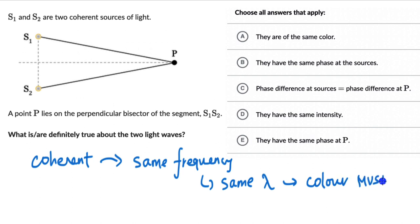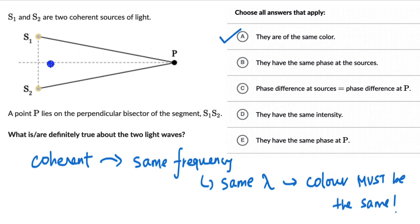Color must be the same. So if we read the options, option A — 'they are of the same color' — is definitely right. Option B says they have the same phase at the sources. It is entirely possible for these two sources to be out of phase, in phase, or to have a constant phase difference of perhaps π/3, 2π/3, or π/6. It is not at all necessary that they need to have the same phase at the sources — there can be a phase difference between two coherent sources. So option B is wrong.